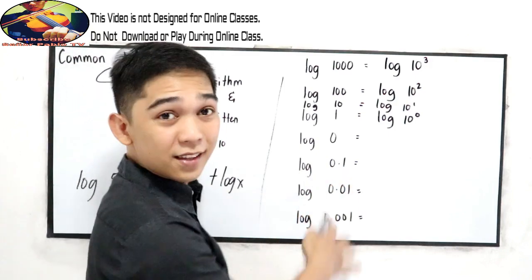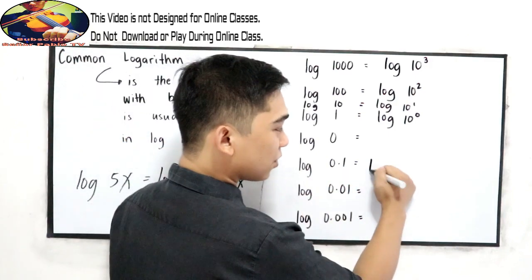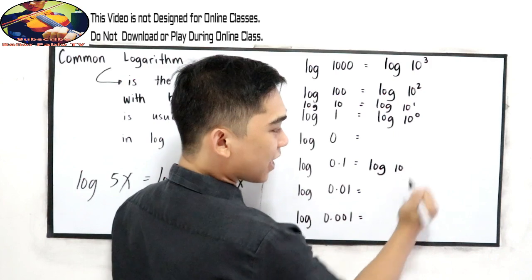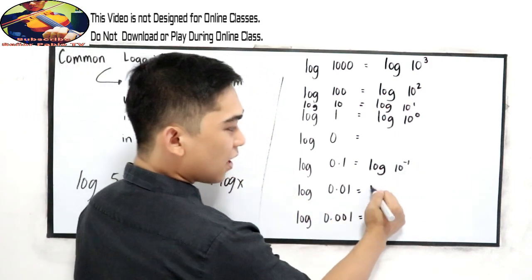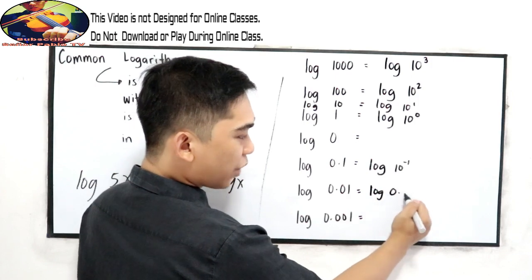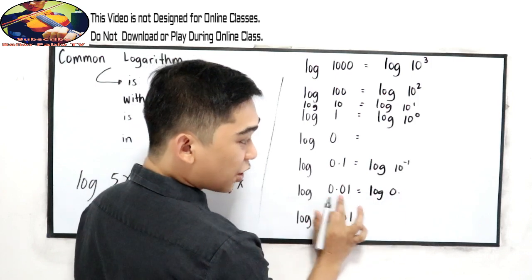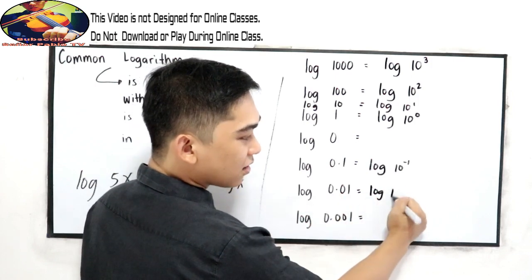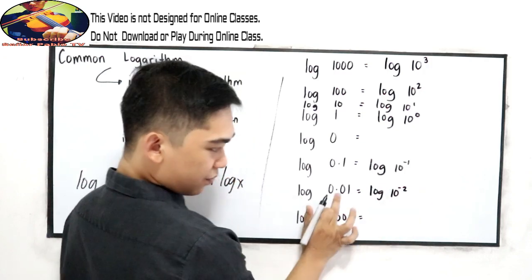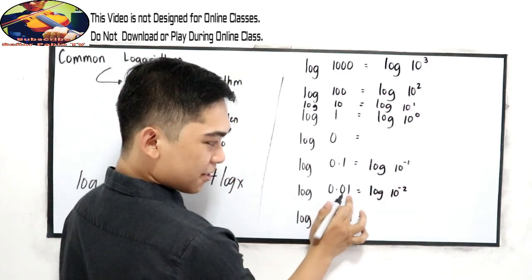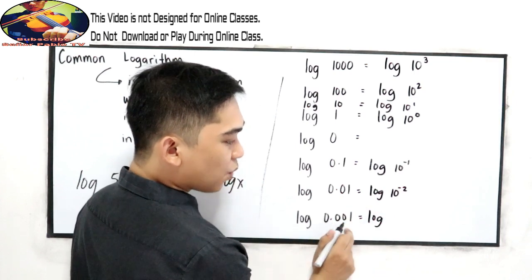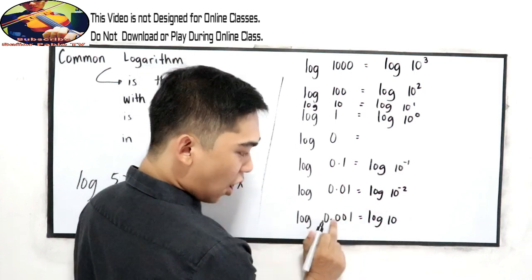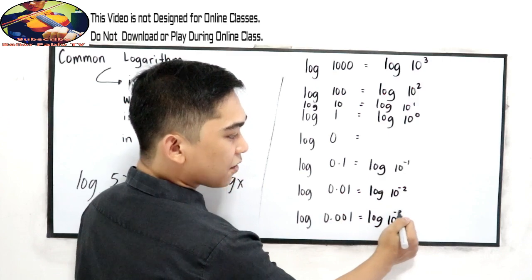Log 0.1, this is equal to log 10 raised to negative 1. Log 0.01, that is log 10 raised to negative 2, two decimal places. And log 0.001, that is 10 raised to negative 3.